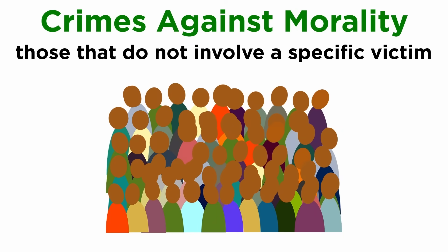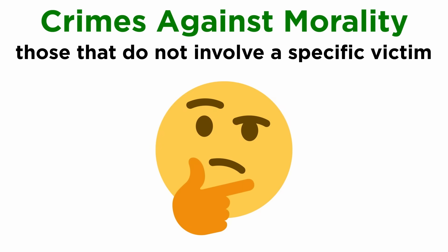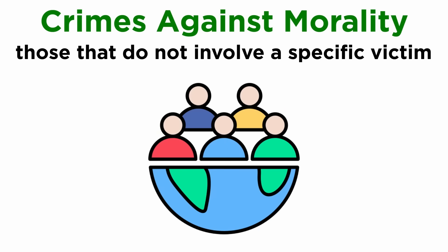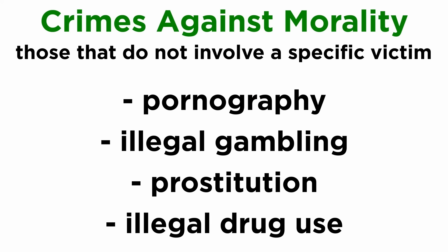Crimes against morality are those crimes that do not involve a specific victim; therefore, these are also known as victimless crimes. So if there are no victims, whom do these crimes affect? The answer is society — these crimes allegedly threaten the moral values of society. One important characteristic of these crimes is that most of the people involved are consenting adults. Examples of these crimes, according to certain governing bodies, can include pornography, illegal gambling, prostitution, and illegal drug use.